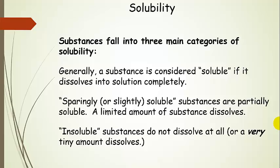Substances fall into three main categories of solubility. Soluble substances dissolve into solution completely. There's an intermediate category called a sparingly or slightly soluble substance, meaning it's partially soluble — some of it dissolves into solution, but a lot of it doesn't. And finally, insoluble substances basically don't dissolve at all, or only a very, very tiny amount dissolves.